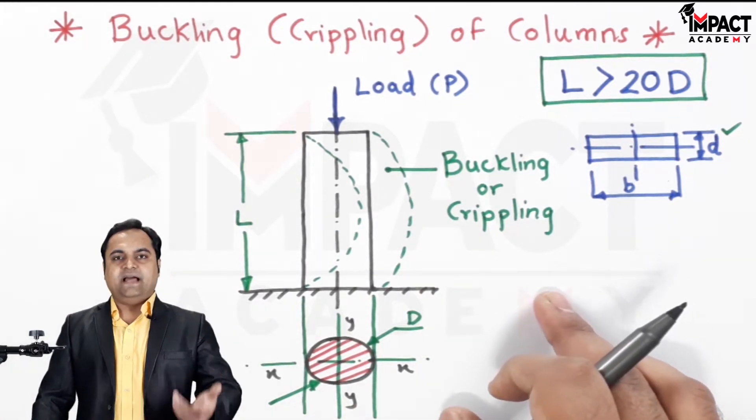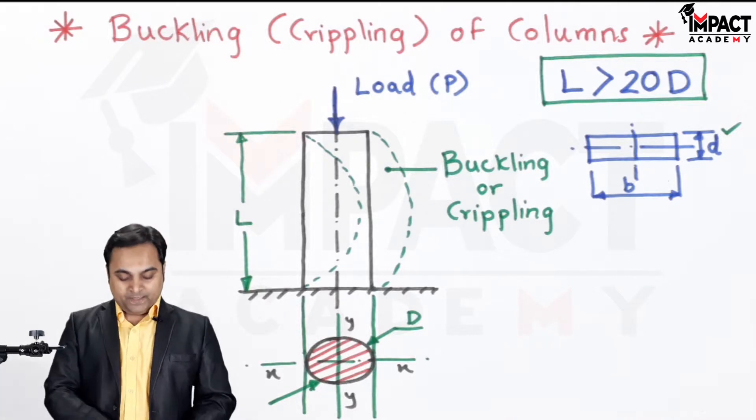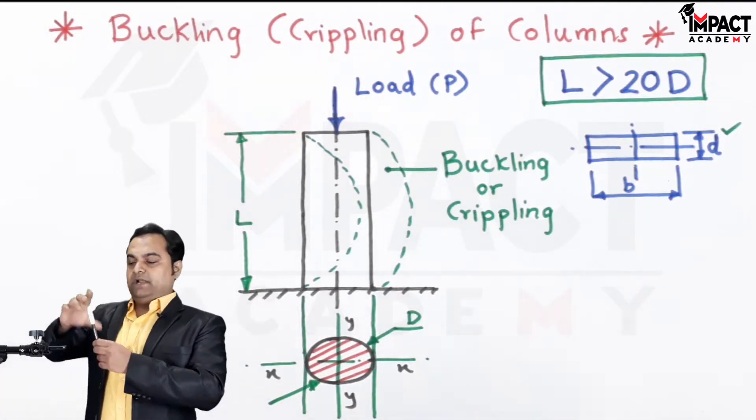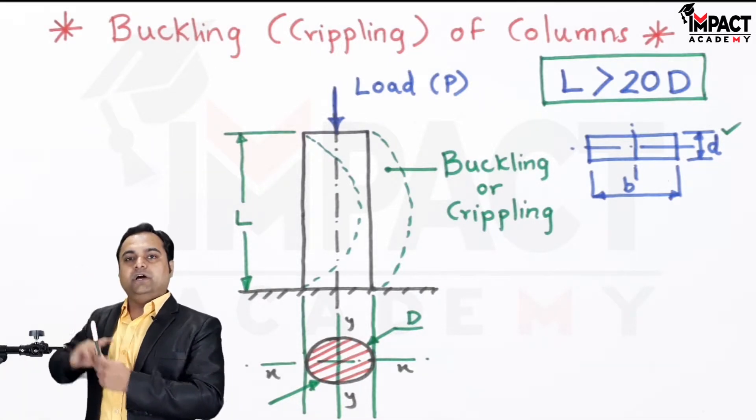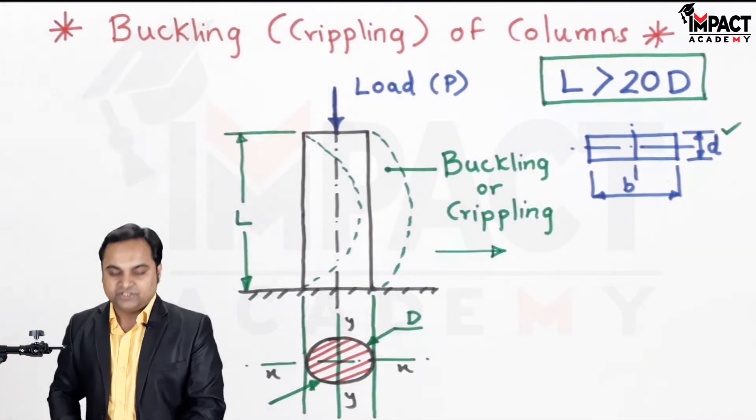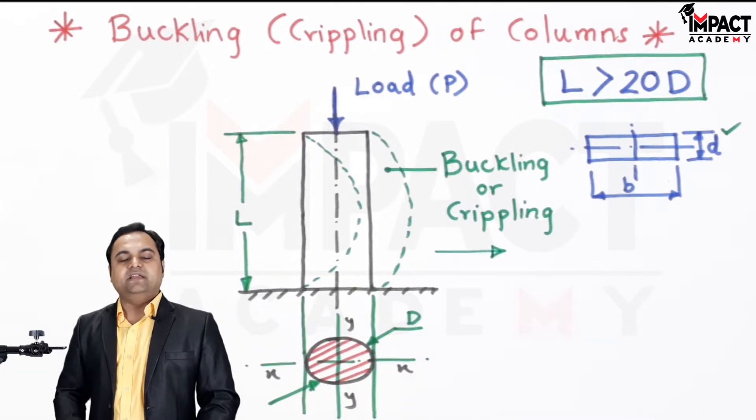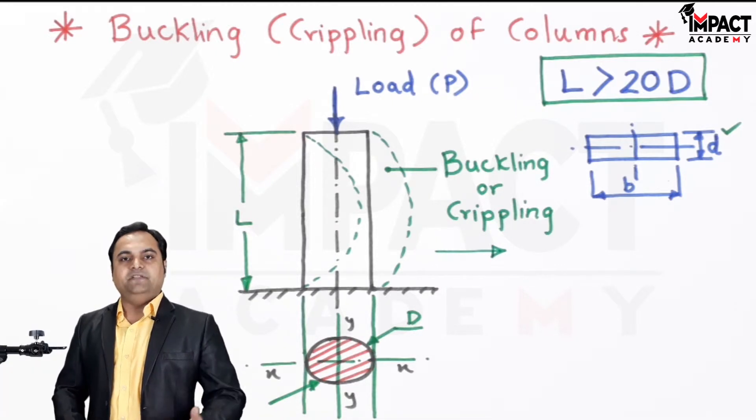So buckling or crippling may be said as whenever the load is acting and the load is axial on the column, if the column is long, when the load is applied over that column it is going to get buckled or move into the lateral direction, like here it is moving in this lateral direction. Such condition like buckling or crippling is never desired in case of a column because whenever a column buckles or cripples, it means it has failed.